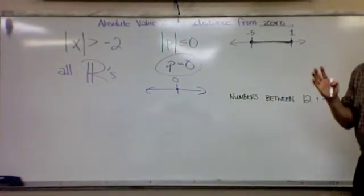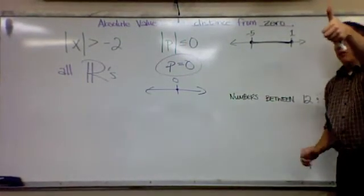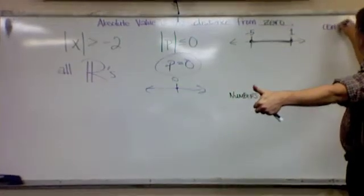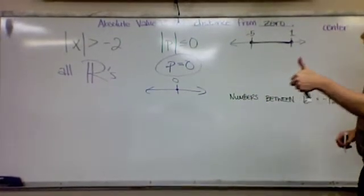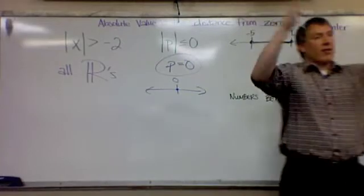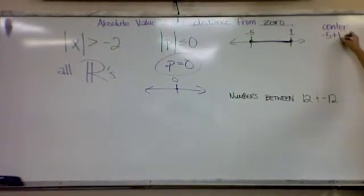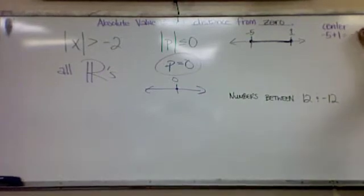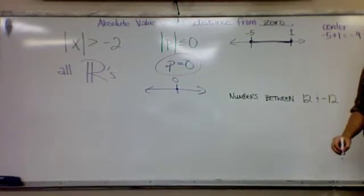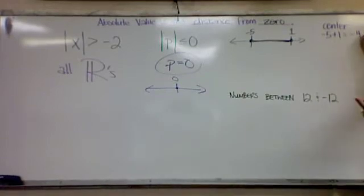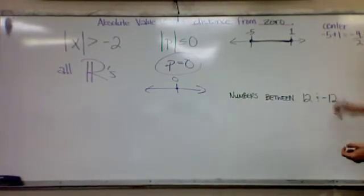So the way that we do it is we find the center. What's the center? Negative. How do you find the center of two numbers? Average. The average, right? So to find the average, you add them together. Negative five plus one equals? Negative four. Negative four, and then you? Divide by two. Divide by how many there are. In this case, there are two. So what's my center? Negative two. So my center is negative two.